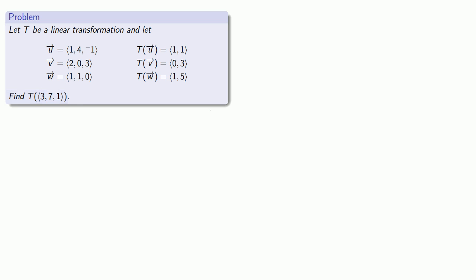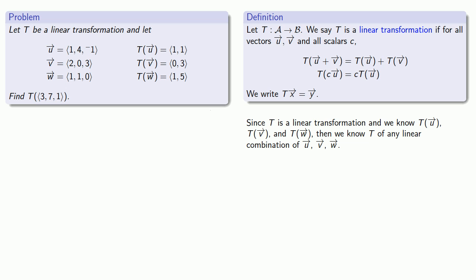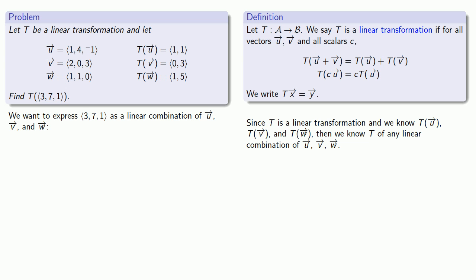So let's plan out our approach. It might be useful to recall what a linear transformation is. The key observation is that if I have a linear transformation and I know what it does to a couple of vectors, then I know what it does to any linear combination of those vectors. Since T is a linear transformation and we know T of U, T of V, and T of W, we know T of any linear combination of U, V, and W. That suggests my first step is to express the vector [3, 7, 1] as a linear combination of U, V, and W. So I'll set up the vector equation and solve the resulting system of equations.